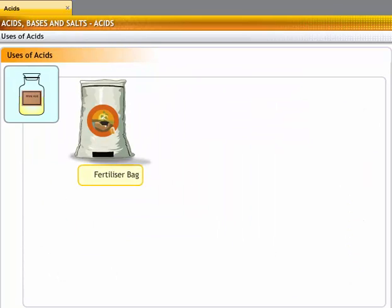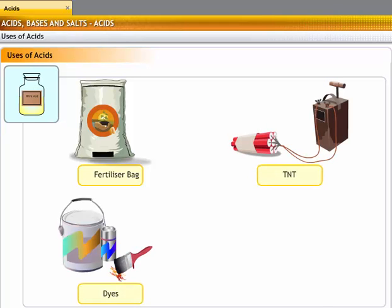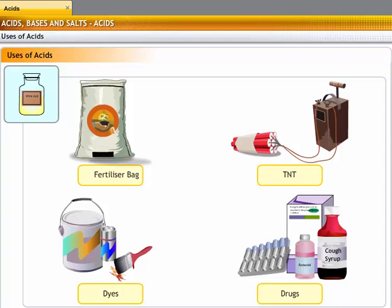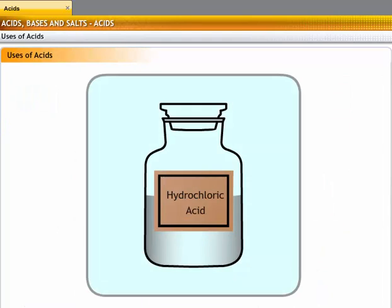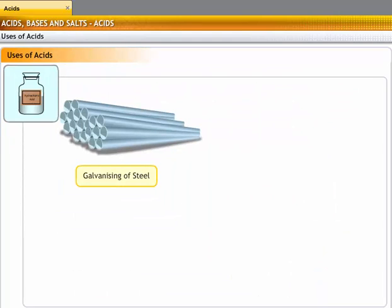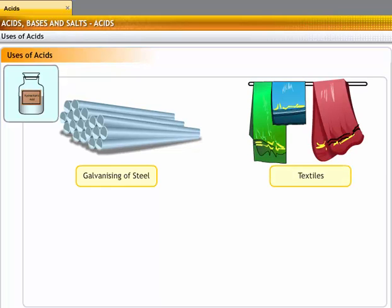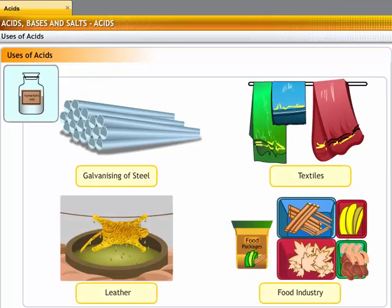Nitric acid is used in the manufacture of fertilizers, explosives like TNT, dyes, and drugs. Hydrochloric acid is used before galvanizing to remove oxide film from steel and also as a descaling agent for boilers. It is also used in the textile, leather, and food industry.